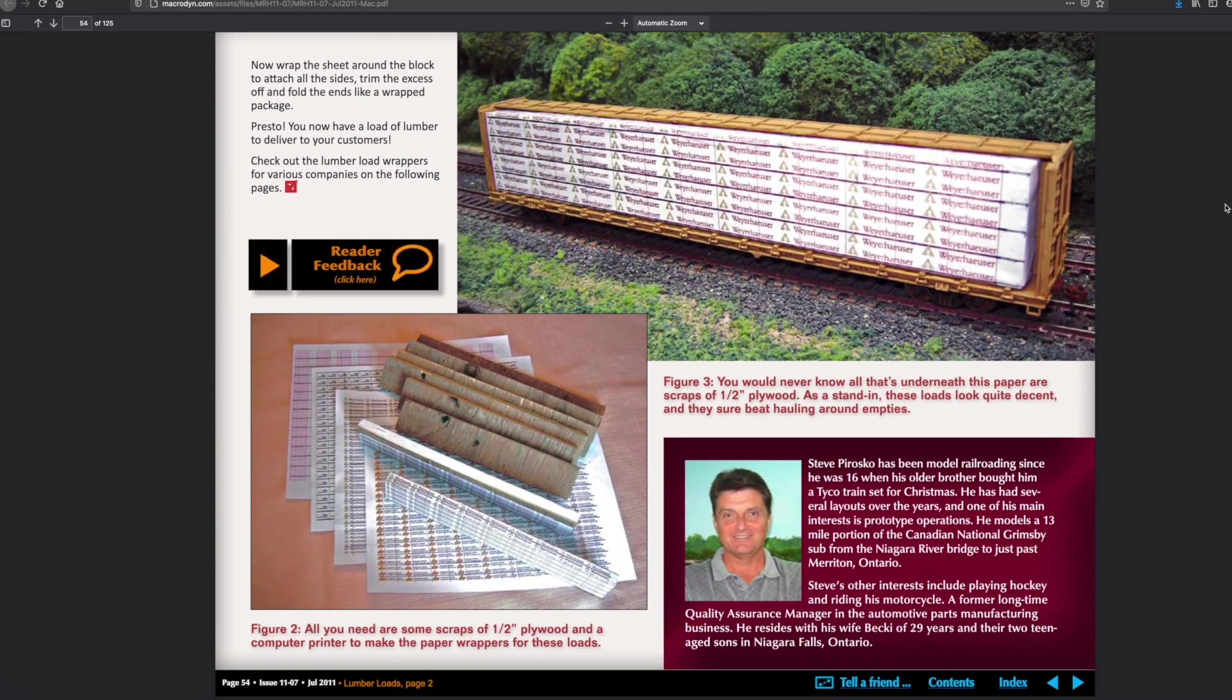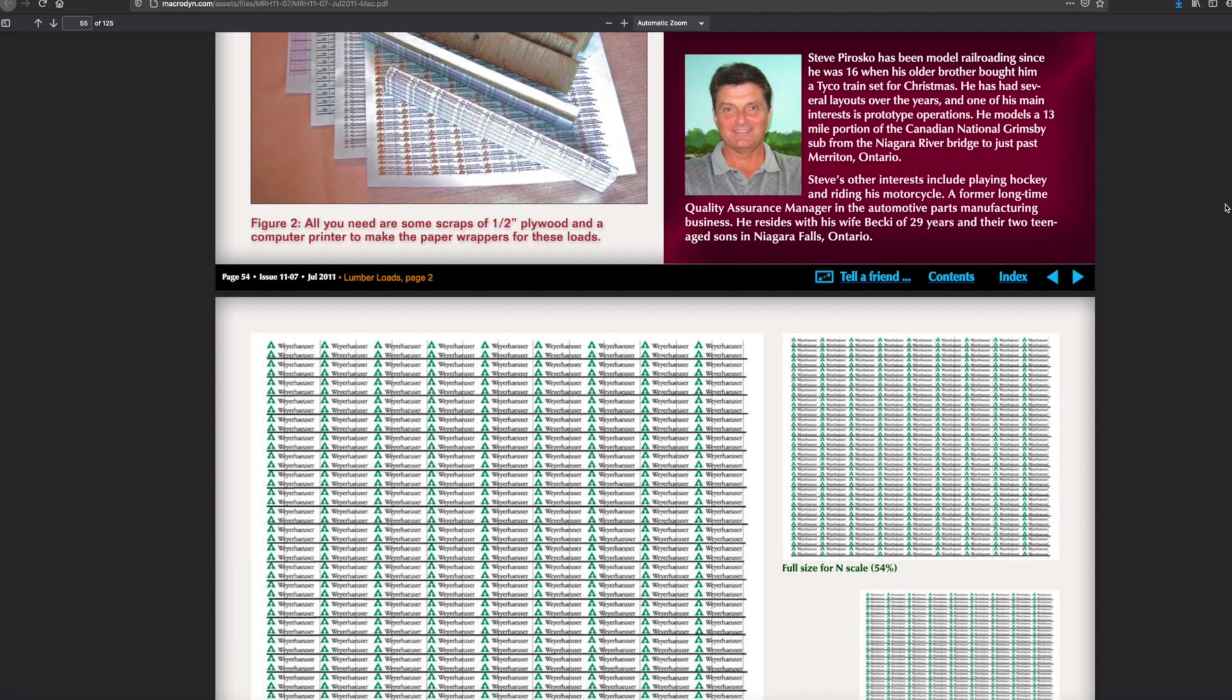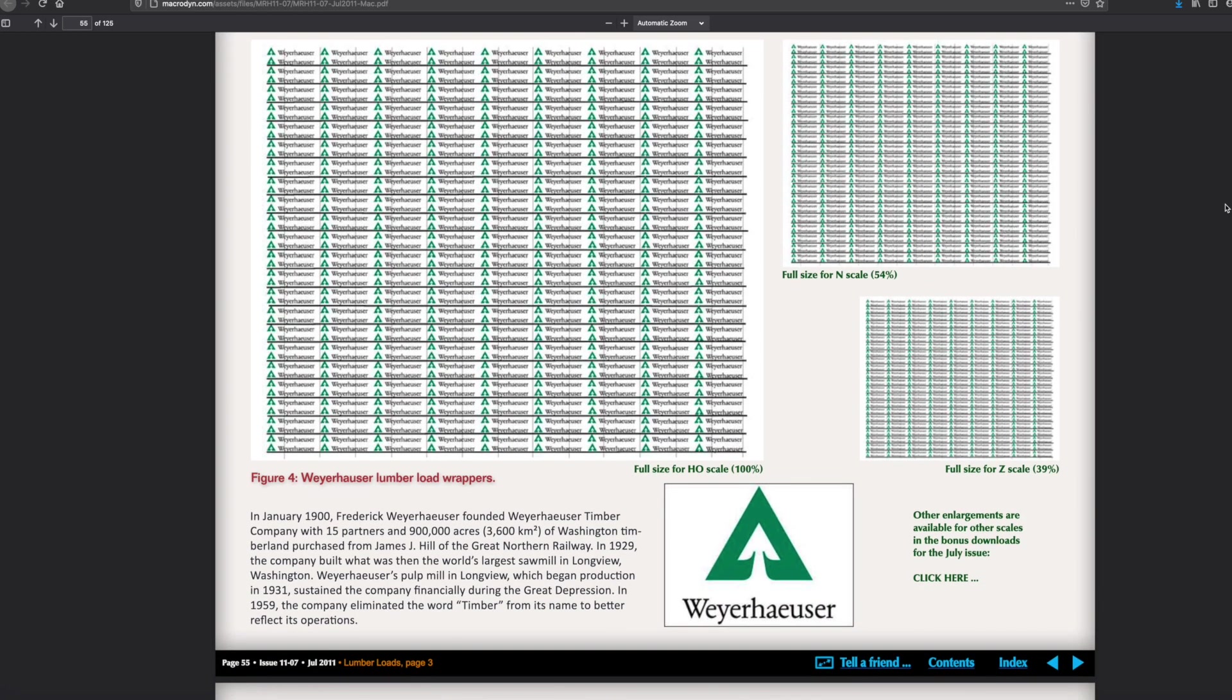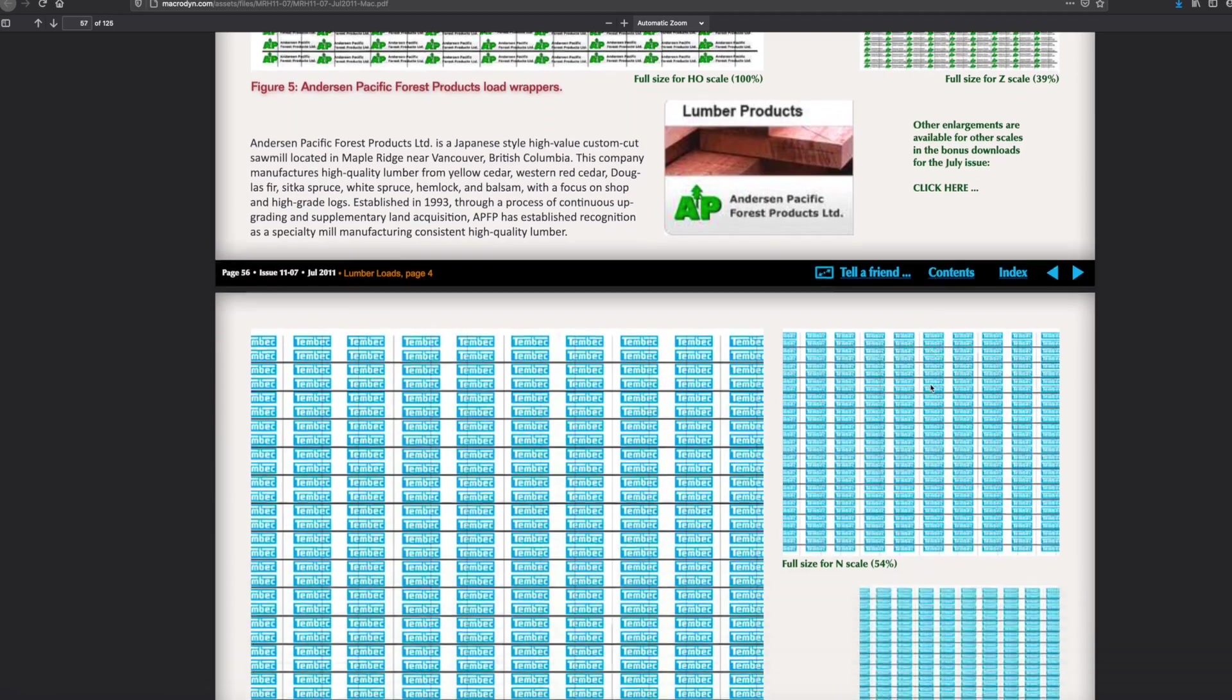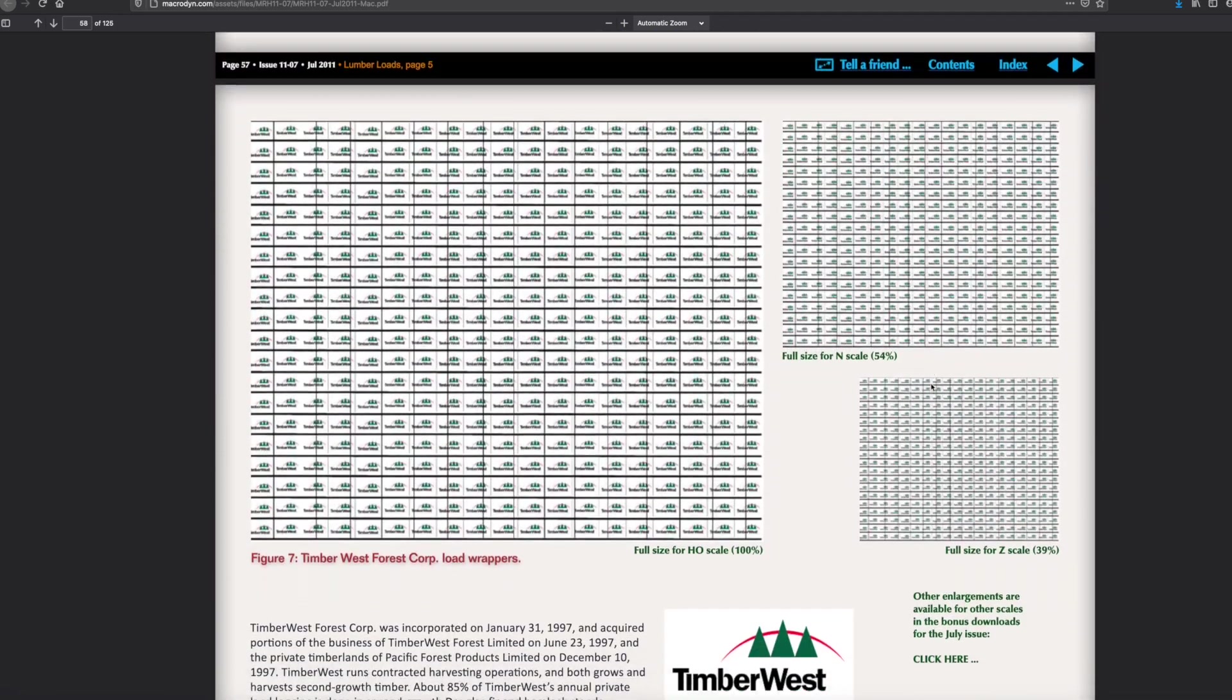Steve Perosco had an article on how you could print the wrapping for lumber loads and put them around some wood blocks for his flat cars. There are images you can print in the article itself from several different lumber manufacturers for HO, N, and Z-scale, and basically you can just cut those out, put them on a piece of wood or plastic, and use them for your loads on your cars.